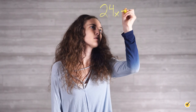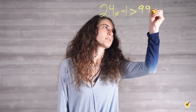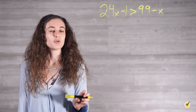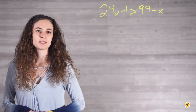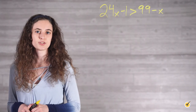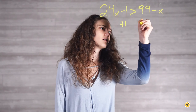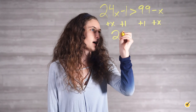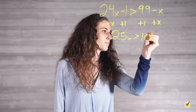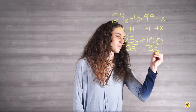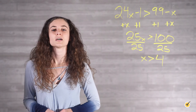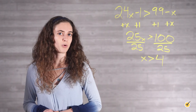Let's try another one. 4x minus 1 is greater than 99 minus x. Remember, the inequality symbol is different in this example, which means that the critical value you find will not be included in the solution set. The approach for this multi-step problem is to gather the variable terms to one side and the constant terms to the other. So we're going to add 1 to both sides and also add x to both sides. This gives us 5x is greater than 100. Then we'll divide both sides by 5, giving us a critical value of x is greater than 4. This final inequality tells us that all values of x greater than but not equal to 4 are in the solution set.